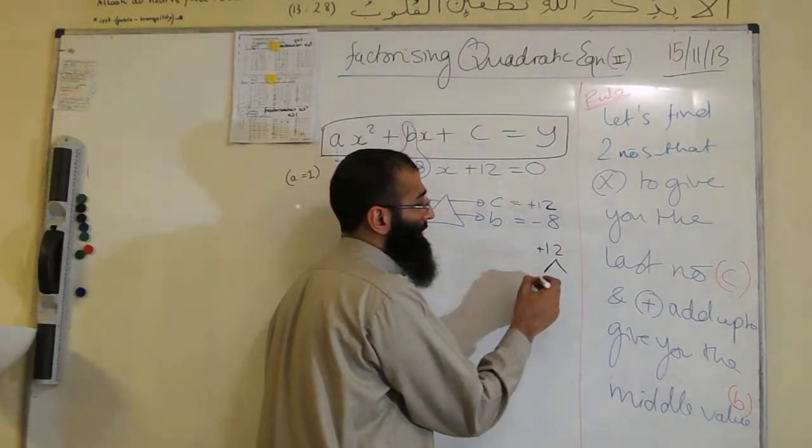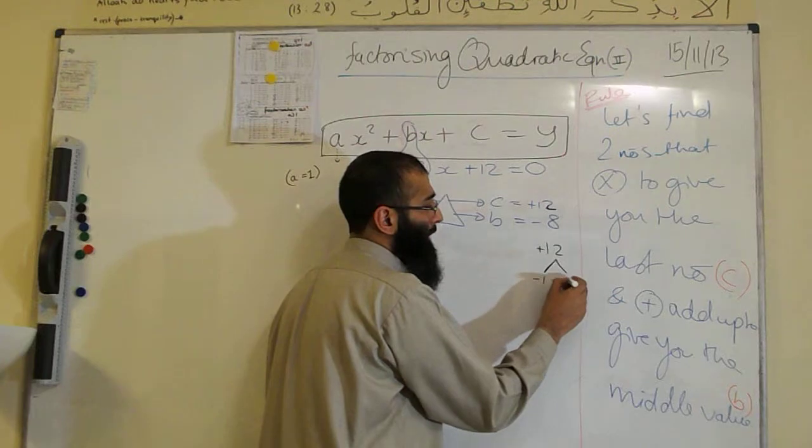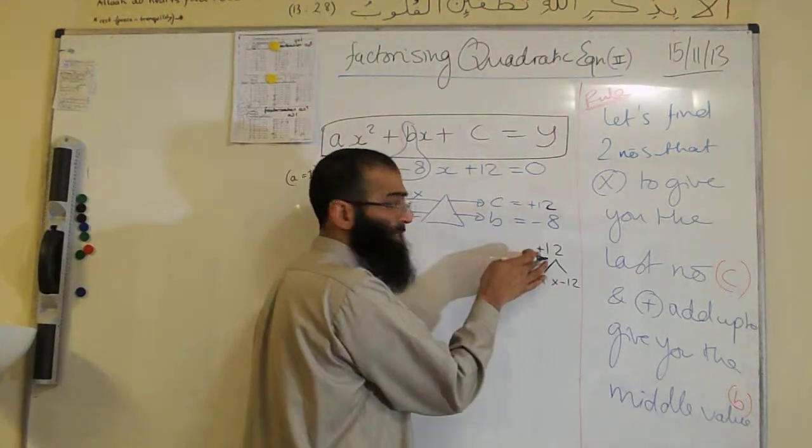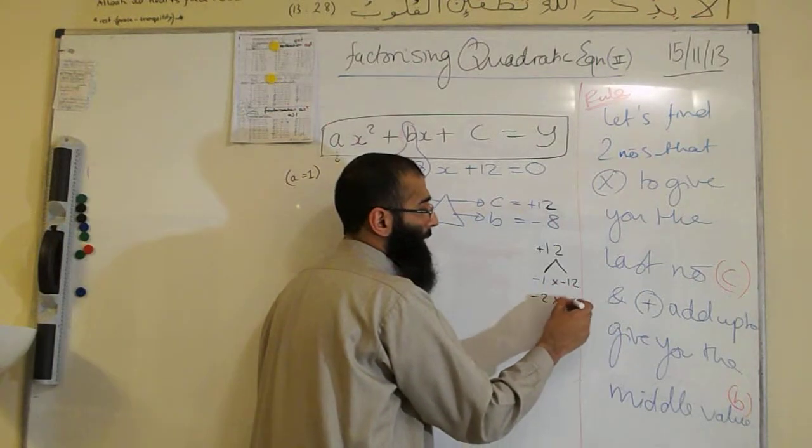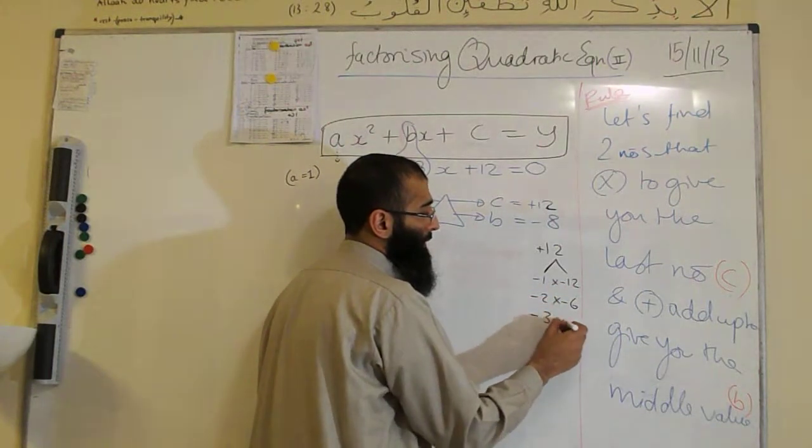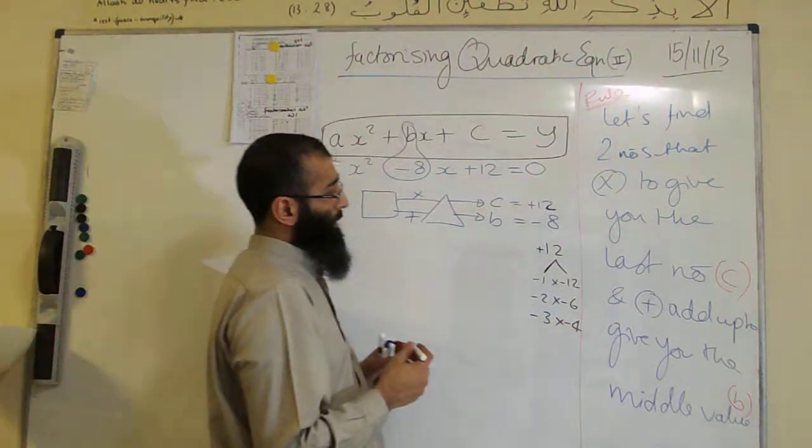When you add them, it gives you a big negative number. Minus 2, minus 2 times by, and minus 3 times by minus 4. Okay, so we've written down only the negative factors here.